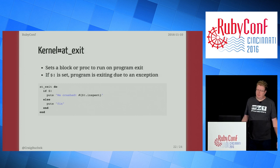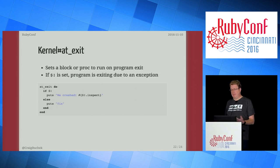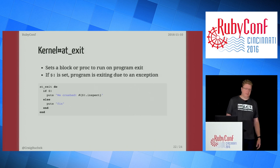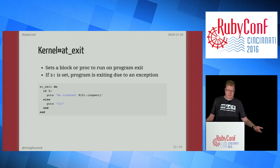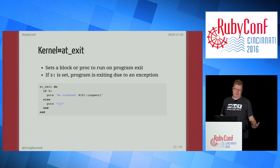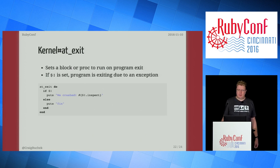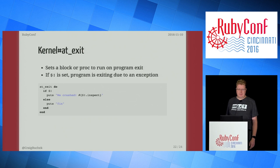at_exit lets you set a block or proc to run when the program exits. If you call at_exit multiple times, they run in reverse order of registration. You can also check $! to see if the program has crashed due to an exception — and you can print out the value of that global variable. If you require the English library, $! is equivalent to $ERROR_INFO if you're not a fan of the Perl-like global operators.